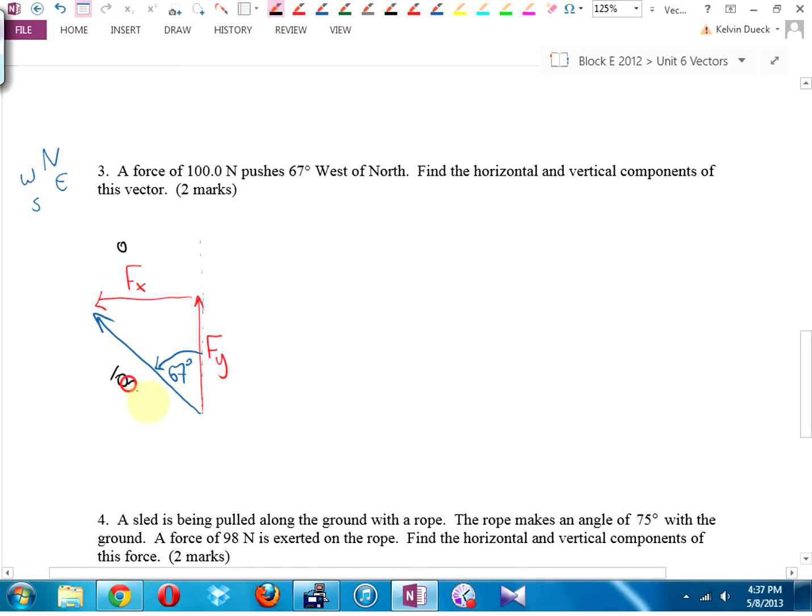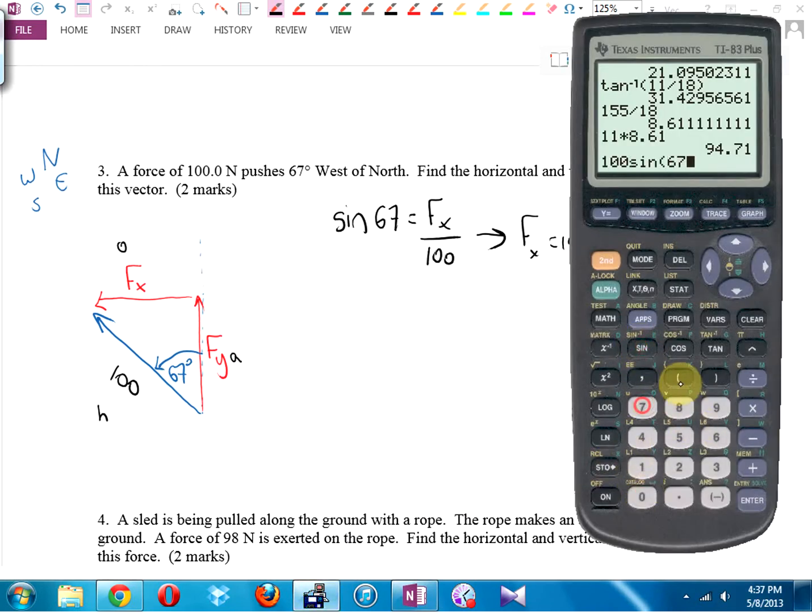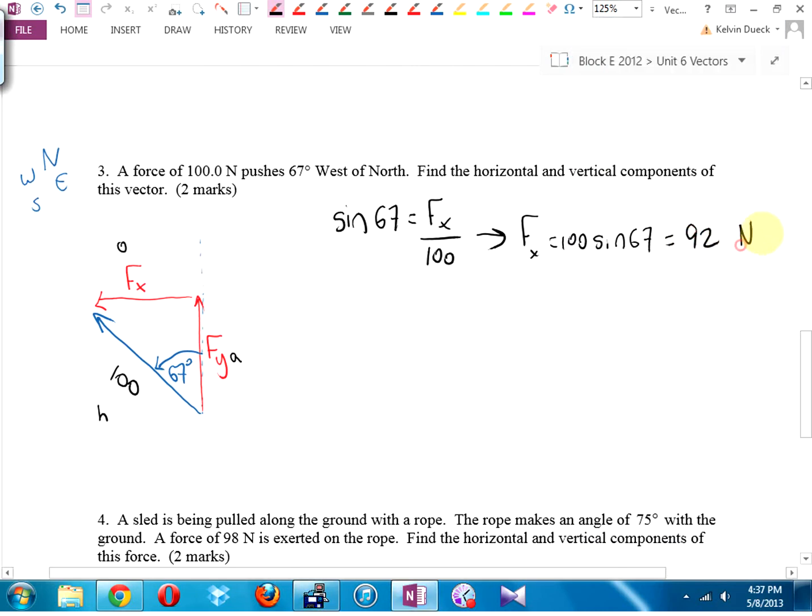Opposite. Oh, this is 100. Hypotenuse adjacent. To find fx, that's going to be opposite over hypotenuse. Sine of 67 equals horizontal divided by 100. This is a little different because up until now, I think almost every time the vertical has been sine and the horizontal has been cos. This time it doesn't look like it. fx is going to be 100 times the sine of 67. 92. 92.1, if you said. I'll just go with 92 newtons.